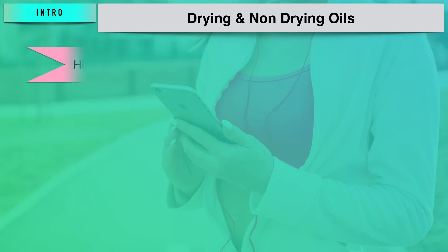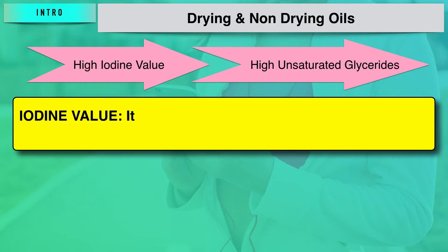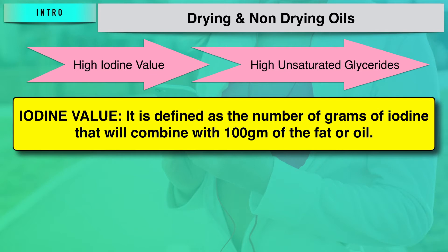Drying oils contain a high percentage of unsaturated glycerides, and that can be found out easily with the help of their iodine values. Since they have a high percentage of unsaturated glycerides, they have associated high iodine values. Iodine value can be defined as the number of grams of iodine that will combine with 100 grams of the fat or oil. So iodine value is basically a measure of the extent of unsaturation present within an oil or fat.